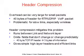Header compression can reduce significant overhead for small packets — for example, 40 bytes of header for an RTP/UDP/IP voice-over-IP packet. Compression runs between the link and network layers and omits fields that don't change or change predictively.